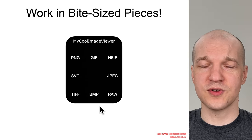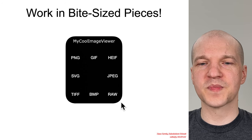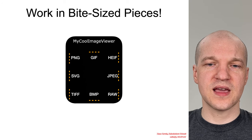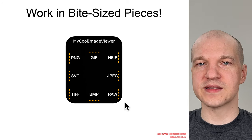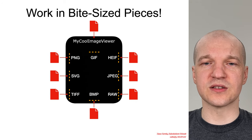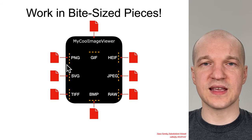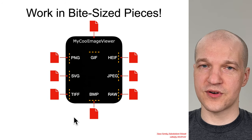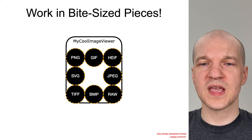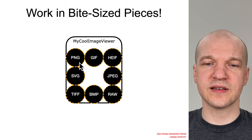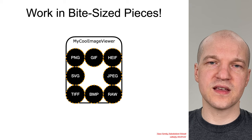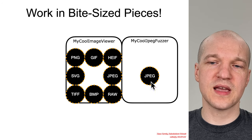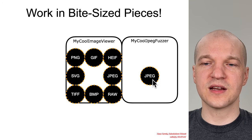If an application supports a bunch of different formats, then in reality each of those formats is its own unique attack surface. An attacker can feed you a PNG, a JPEG, or a TIFF, and each of those could have its own unique vulnerabilities. So a defender or an attacker can pluck out one of those attack surfaces and fuzz only that.